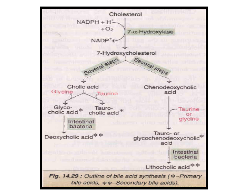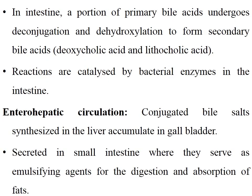The same 7-hydroxycholesterol, through several steps, is converted into chenodeoxycholic acid. Chenodeoxycholic acid with the help of taurine and glycine is converted into tauro- or glyco-chenodeoxycholic acid. Under intestinal bacteria action, it changes into lithocholic acid. The double asterisk indicates secondary bile acids and the single asterisk indicates primary bile acids.